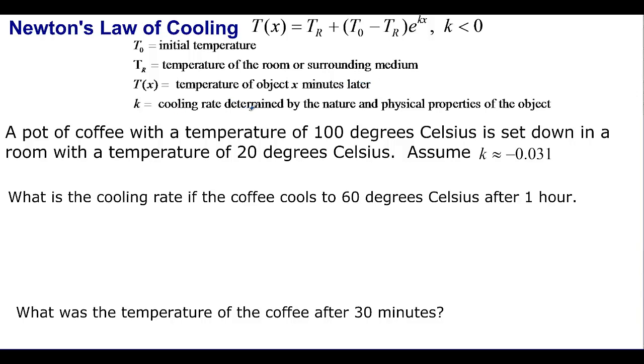And K is a cooling rate. So we have a pot of coffee with a temperature of 100 degrees Celsius and it's set down in a room with a temperature of 20 degrees Celsius. We want to know what that cooling rate is. So we're looking for K.